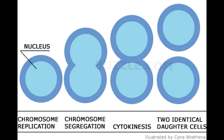Researchers use E. coli as a model organism for studying the steps of binary fission in detail. It is to be borne in mind that the chromosome in prokaryotes comprises only a single circular DNA. Like other cellular processes, binary fission occurs when organisms are thriving in favorable environmental conditions. The step-by-step process of binary fission is enlisted below.